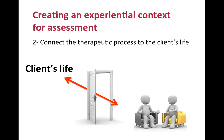Sometimes the form — or what we call the topography of the behavior — is quite different from what the client does outside the session, but functionally it is still an instance of the clinically relevant behaviors. For example, a client who deals with anxiety by using substances like alcohol or medication will probably not use substances in session, but he might change topics of conversation, avoid eye contact with the therapist, or pretend he's sick and has to leave. The topography of these behaviors is different from using alcohol or medication, but the function is still to decrease anxiety, and thus it is an instance of the clinically relevant behaviors we can assess in session.